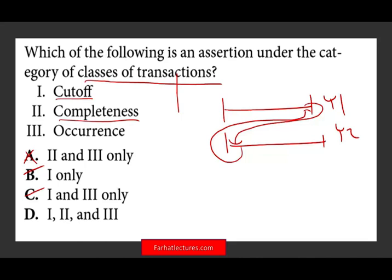Let's look at occurrence. What is occurrence? It's important that you understand the transaction. Occurrence means that the transaction or event did actually occur and it belongs to the company. Here you are usually dealing with overstatement, because companies try to book revenues for something that did not really happen. Even if you book expenses that did not occur, you are dealing with overstatement. Overstatement of revenue is also a presumption in any audit. Definitely occurrence deals with the classes of transaction. Therefore, the answer is D — those are the assertions that deal with classes of transaction.